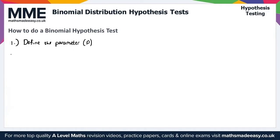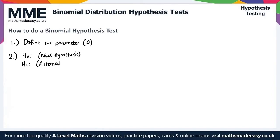Step two: define our null hypothesis and the alternate hypothesis. The null hypothesis is H0 and the alternate hypothesis is H1. As this is a hypothesis test, we need to define both of our hypotheses.